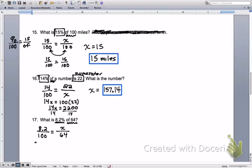You know what to do here. We're going to cross multiply. 8.2 times 64 equals 100 times x. 8.2 times 64 is 524.8, and we will divide both sides by 100 to get x alone.